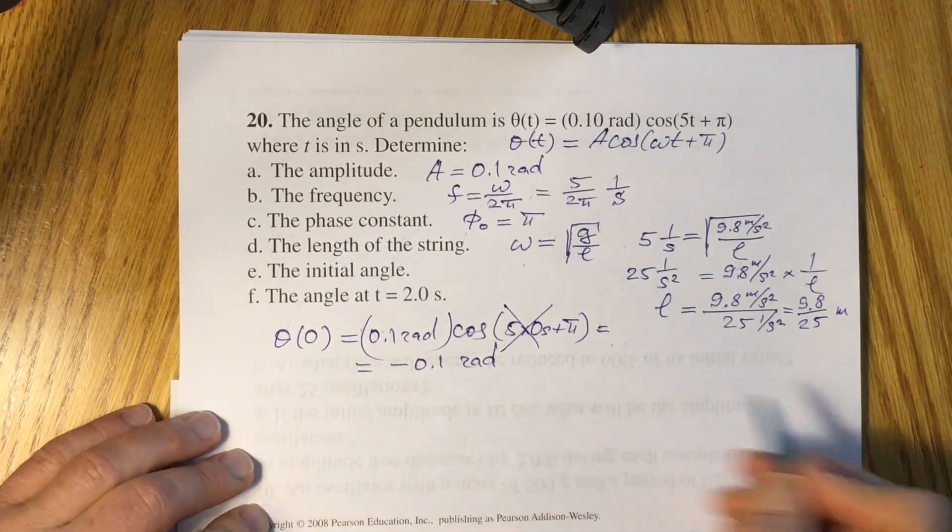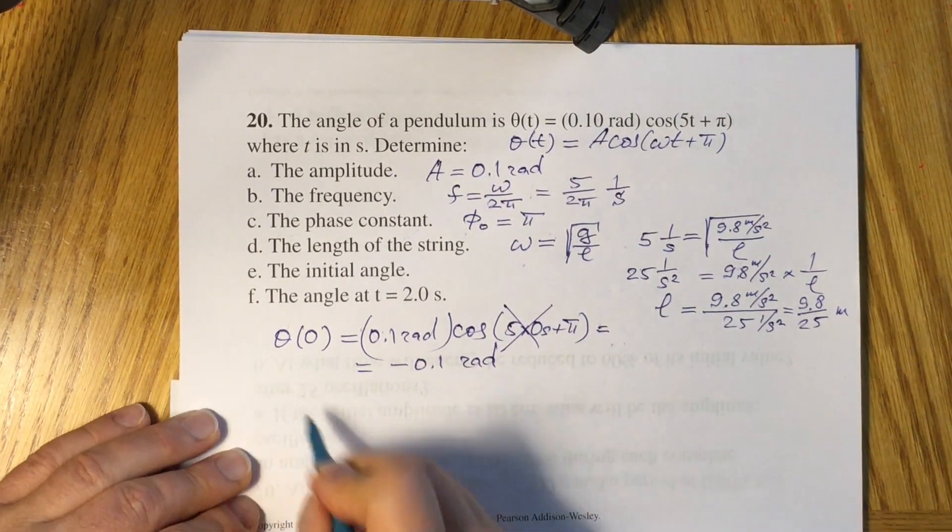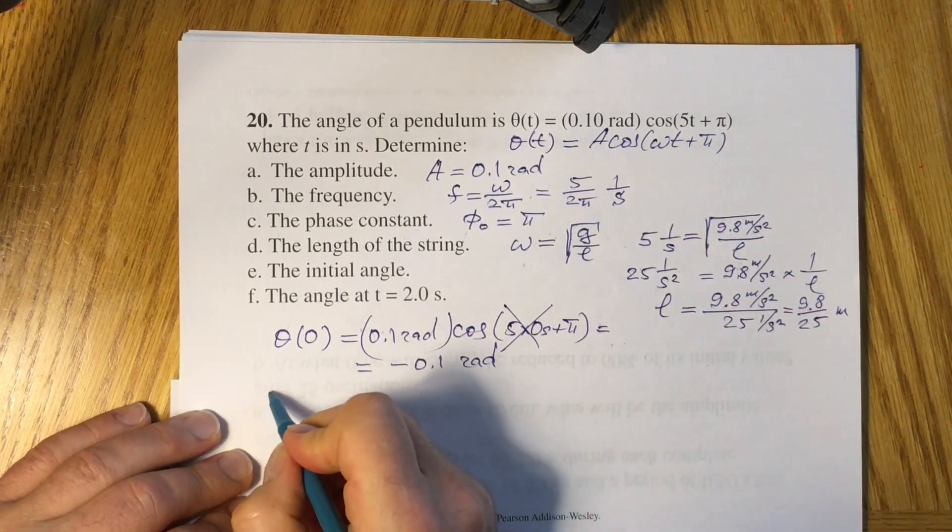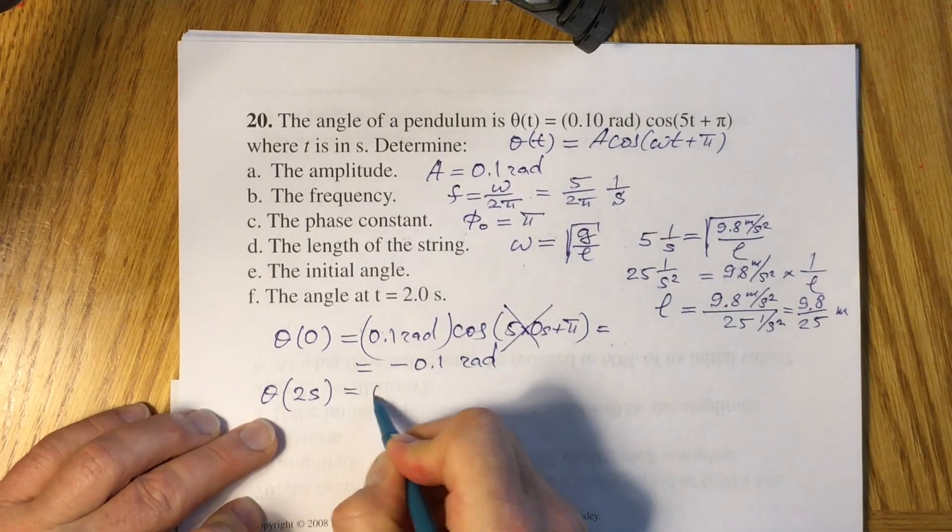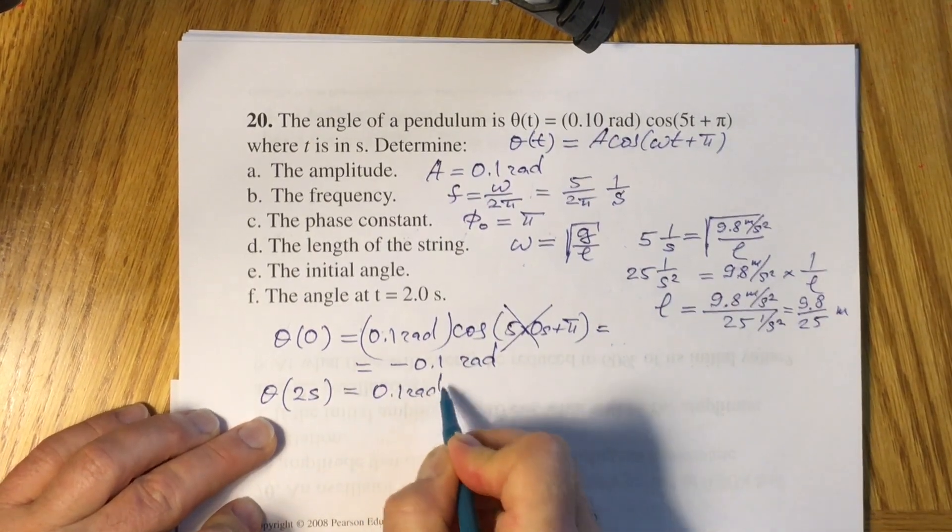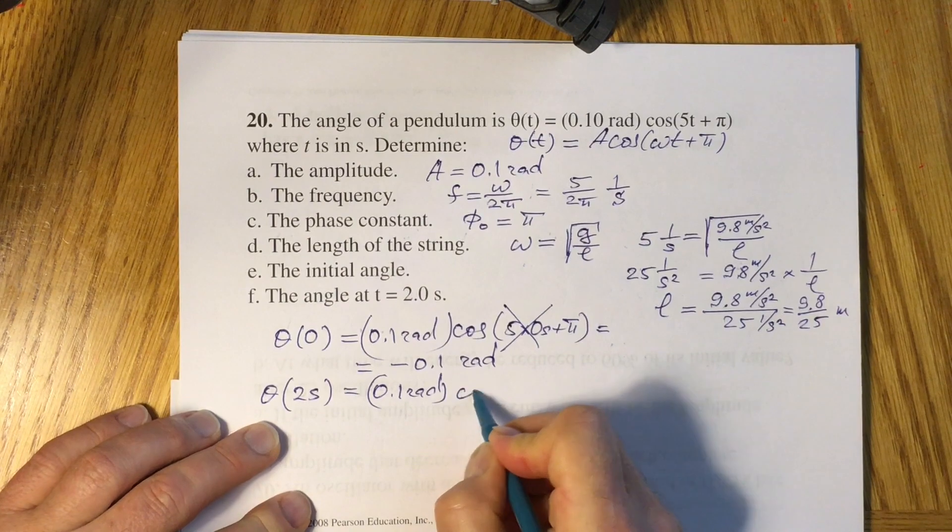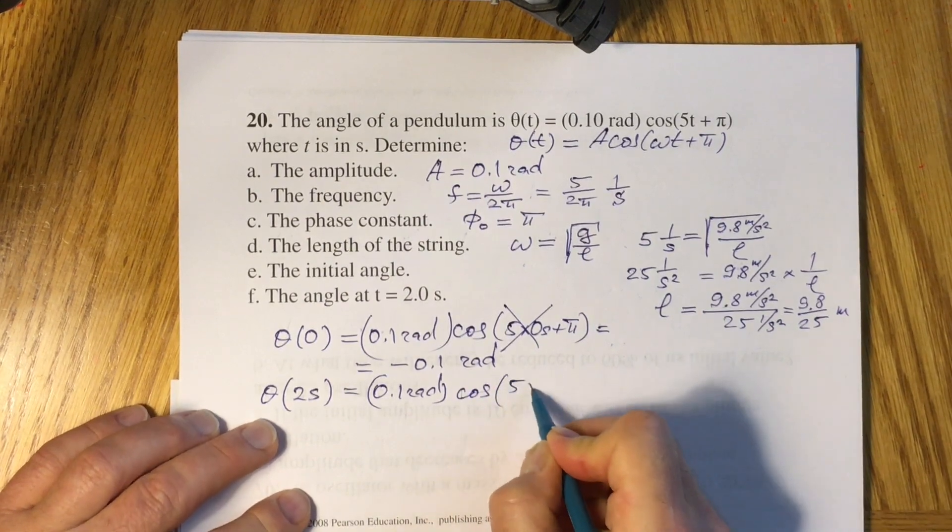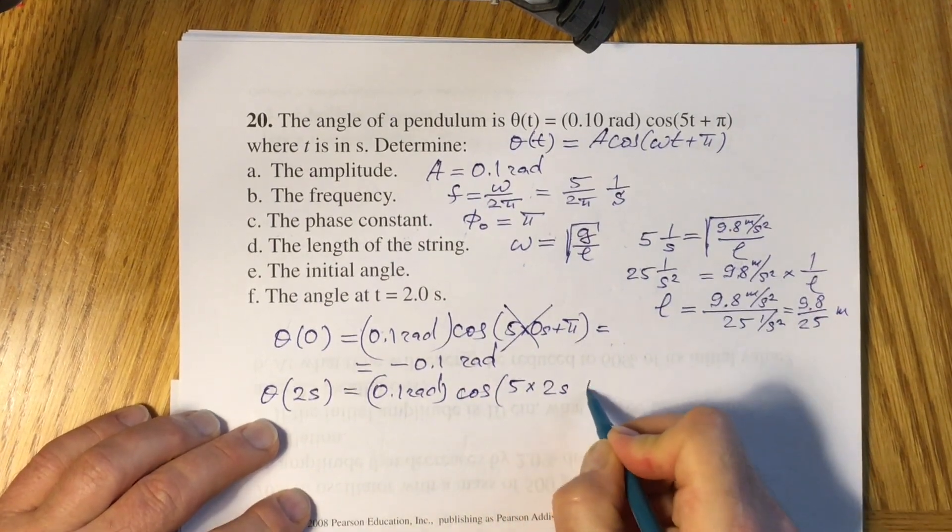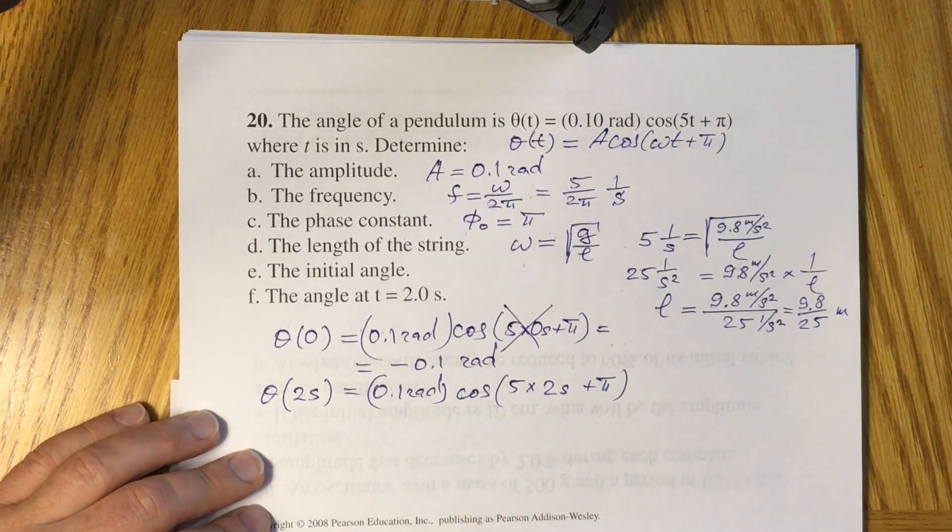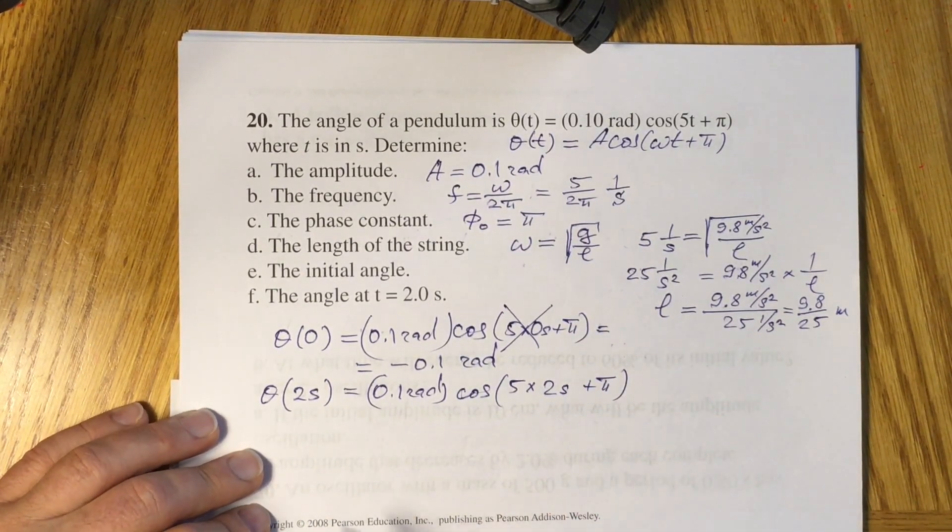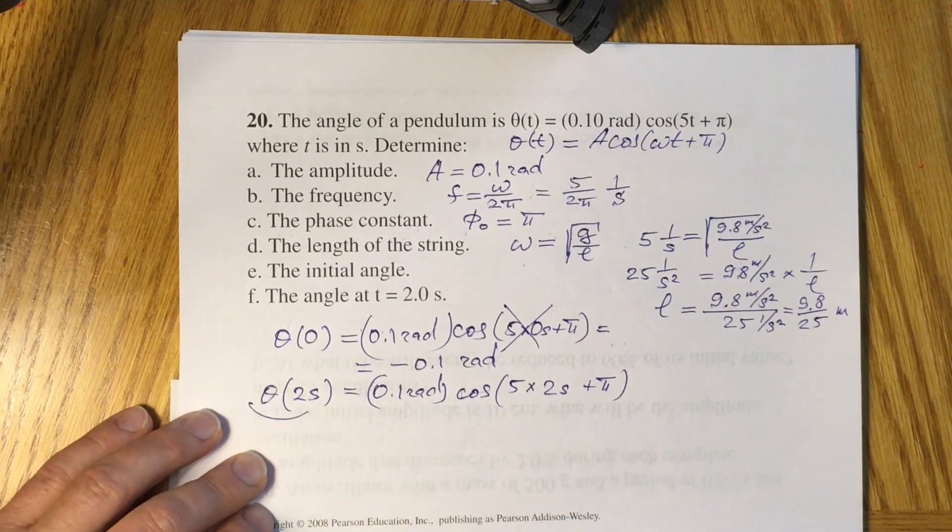And to find angle at t equals 2 seconds, you just have to put 2 seconds in your original equation. Theta at 2 seconds will be equal 0.1 radians times cosine 5 times 2 seconds plus pi. So you have to do calculations with the help of the calculator and you will find your angle at the second second.